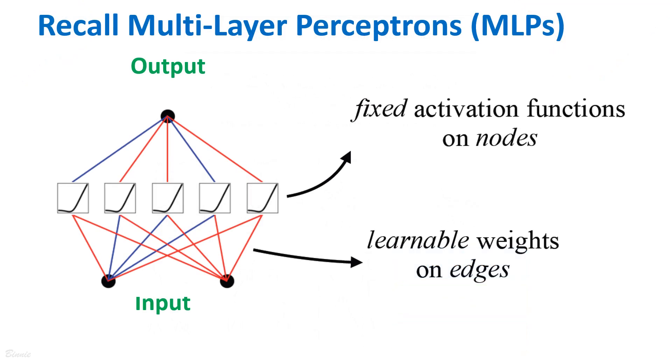Before we talk about KAN, let's recall the concept of multi-layer perceptrons, MLP, also known as fully connected feedforward neural networks. They are fundamental building blocks of modern deep learning models. They consist of interconnected layers of nodes with fixed activation functions, where each connection between nodes has a learnable weight. MLPs are widely used in machine learning to approximate nonlinear functions and play a vital role in deep learning models.